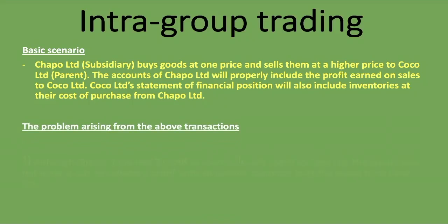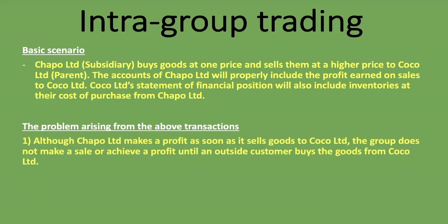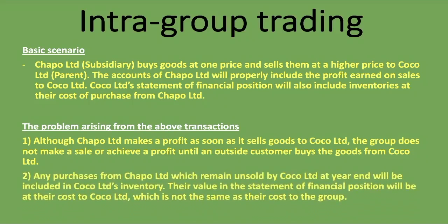Here is where the problem arises. Although Chapel Limited, being the subsidiary, makes a profit as soon as it sells goods to Coco Limited its parent company, the group does not make a sale or achieve a profit until an outside customer buys the goods from Coco Limited. If goods are moving around within the group, the group itself does not make a sale or achieve a profit. We don't recognize a sale or a profit until an outside customer from outside the group buys those goods.